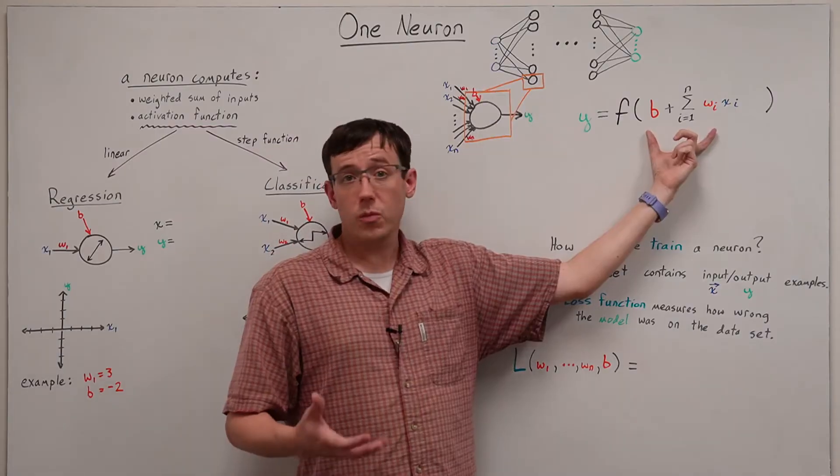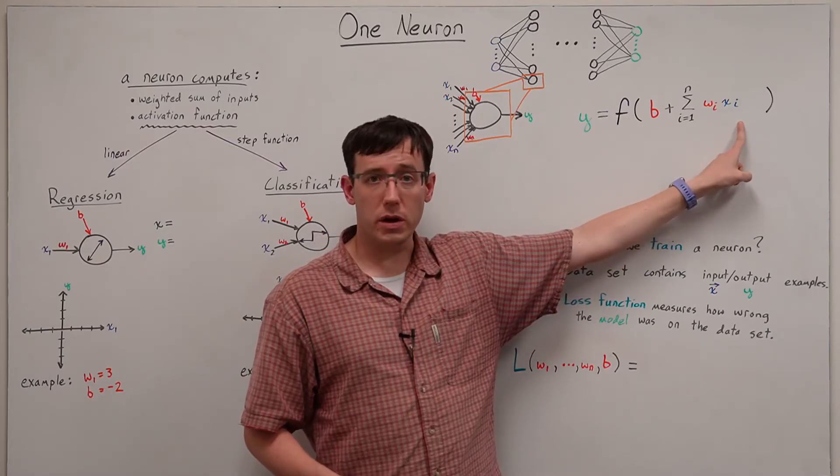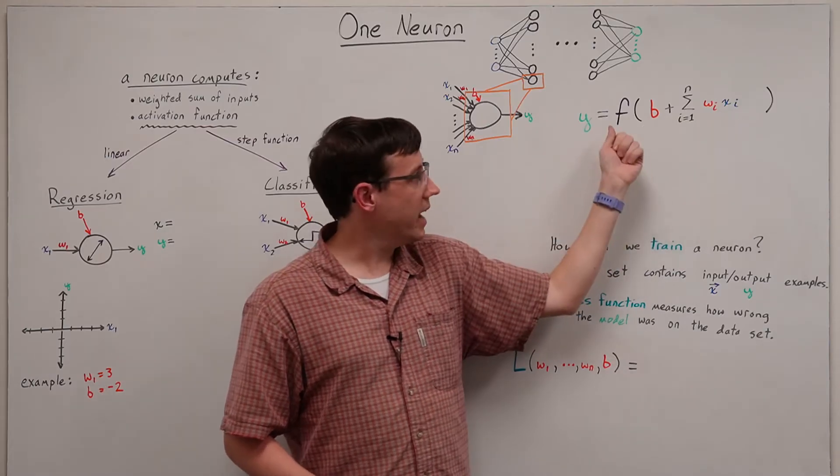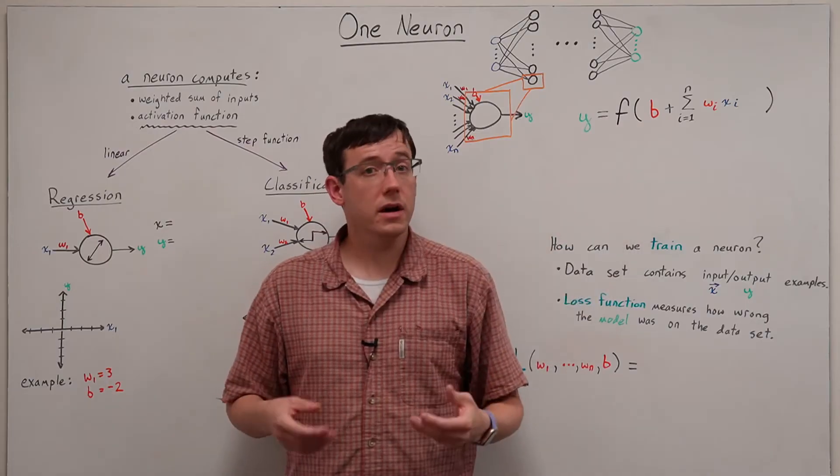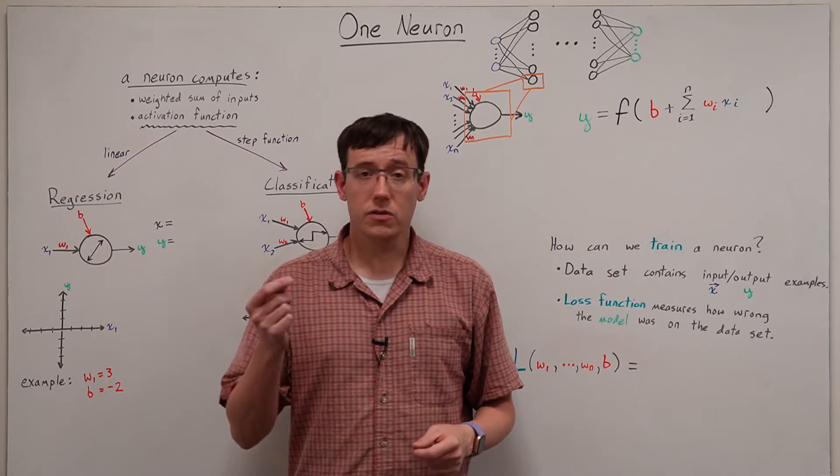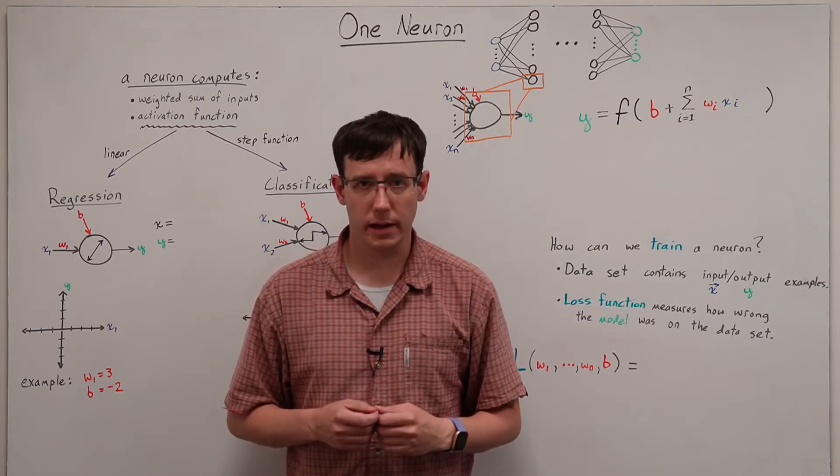So every time we have a neuron, it will perform a weighted sum over its inputs, but different neurons can have different activation functions. And in the context of a single neuron model, there are a couple of activation functions I'd like to highlight.